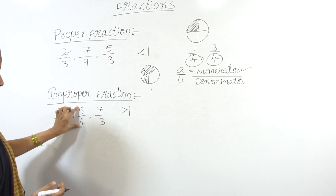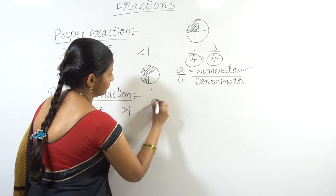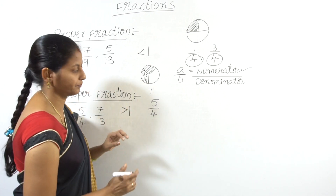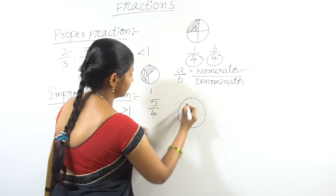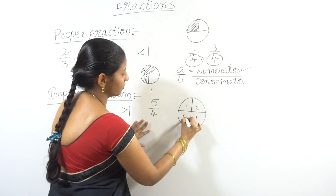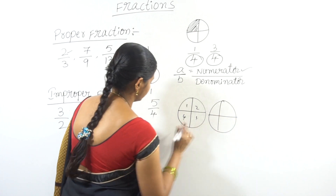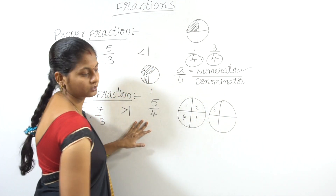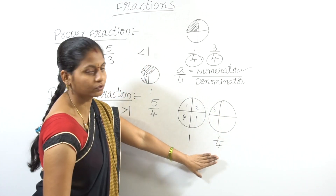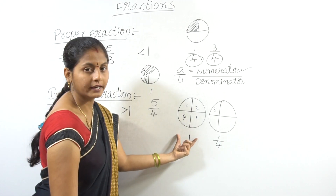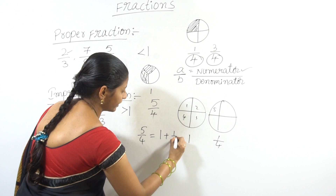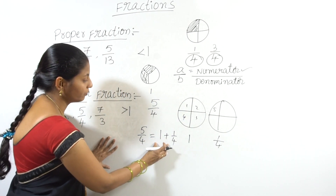In the same example, I will show you 5 by 4. 5 by 4 means 4 equal parts. One object has 4 equal parts, and I need 5 parts total: 1, 2, 3, 4, 5. So 5 by 4 equals 1 whole plus 1 by 4.